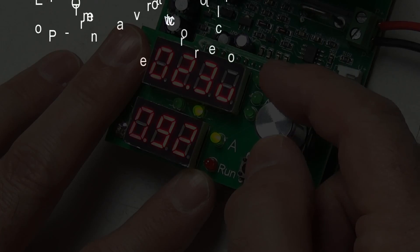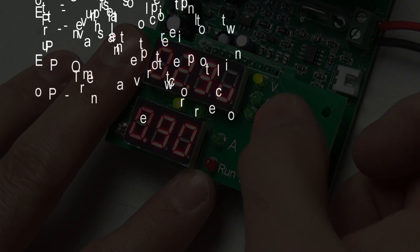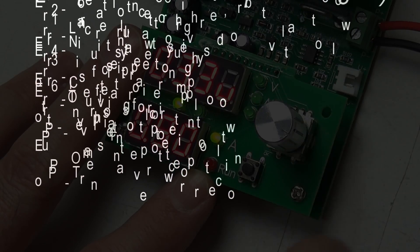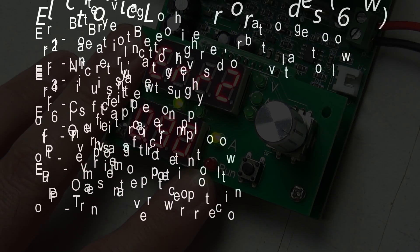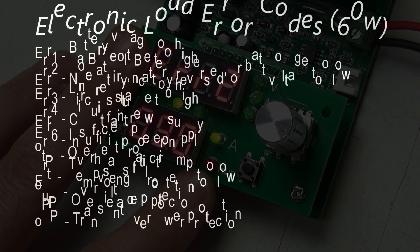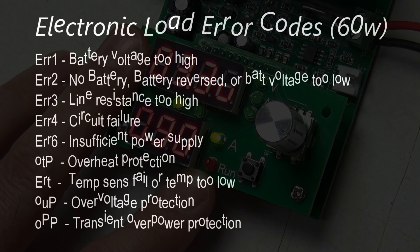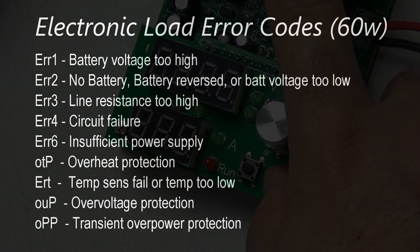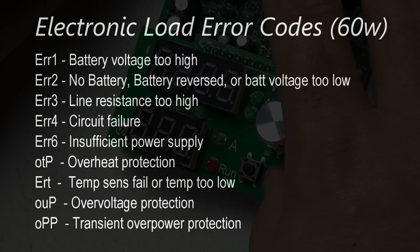So just while we're on the error codes, you've probably seen one flash up on the screen there already. Error one is battery voltage too high. Error two is no battery, battery reversed, or battery voltage too low.